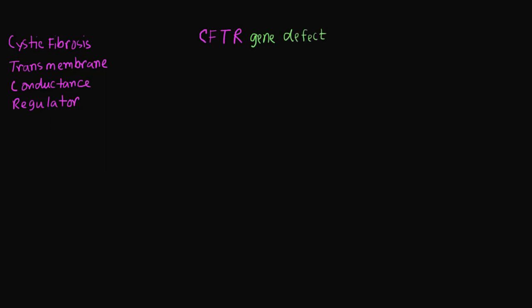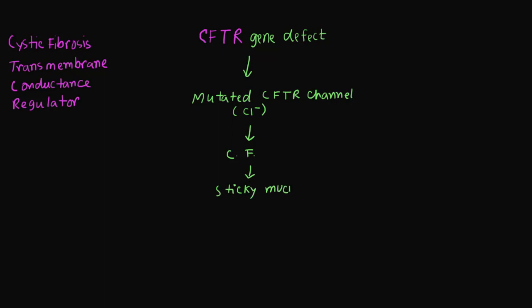Due to the CFTR gene defect, it causes a mutation in the CFTR channel, which is a channel protein responsible for the conductance of chloride ions. When we have this CFTR channel defect, it produces cystic fibrosis. One of the major symptoms is very thick and sticky mucus, because a lack of chloride channel activity leads to thickness and dryness of the mucus. One of the major complications is lung infection, and most people dying from cystic fibrosis die because of this respiratory disease.